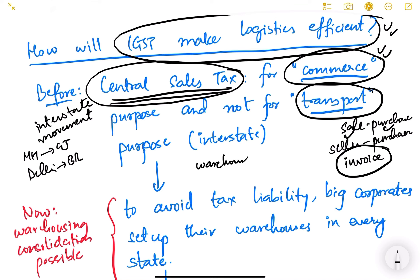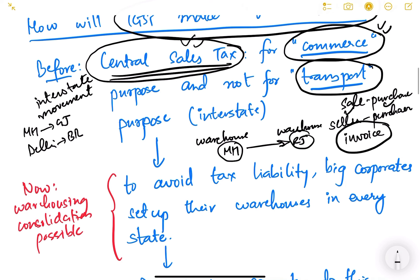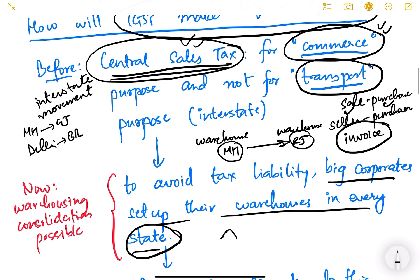For example, if a company like Toyota had a warehouse in Maharashtra and another in Rajasthan, and wanted to move Innova cars between them, no Central Sales Tax would be levied because it was just a movement, not a sale. Big corporates exploited this loophole by setting up warehouses in every state, showing interstate transfers as internal transport rather than sales, and selling from those warehouses — avoiding tax liability through a lot of tax evasion.